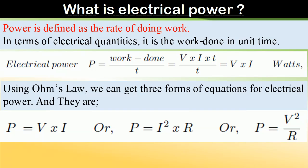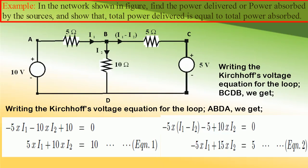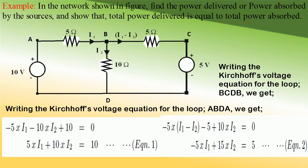If you understand these concepts of voltage, current, power, and energy, we can apply them in solving numerical examples. Let us consider a simple example where we are required to find the power delivered or power absorbed by the sources, and also show that the total power delivered equals the total power absorbed. Considering the network shown in the figure, I1 is the current flowing through branch 1, I2 is the current flowing through branch 2, and by applying Kirchhoff's current law to junction B, we get the current flowing through branch 3 as I1 minus I2.